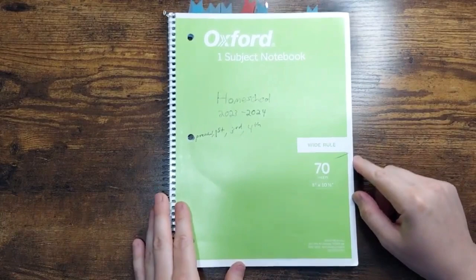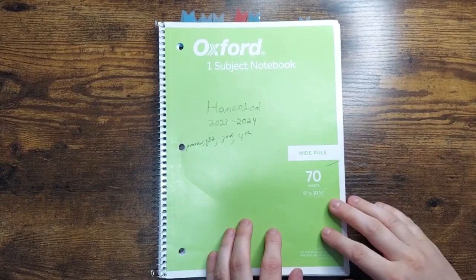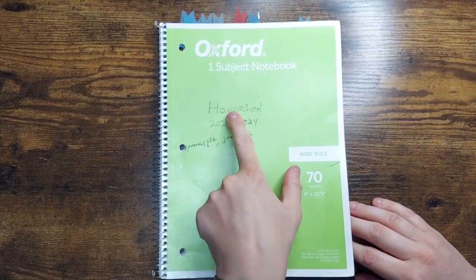The next thing you're going to need is a spiral bound notebook. Now I just get a different color for every year. It just helps organize it. I do apologize, I have horrible handwriting. So I marked what it is, the years, and then the grades I have.